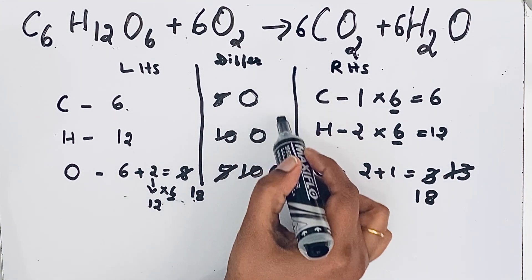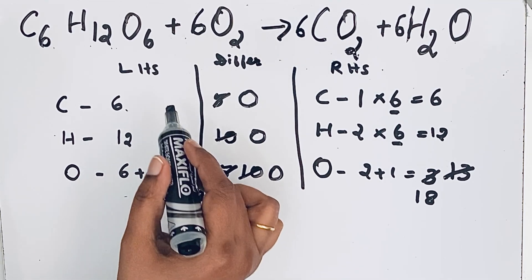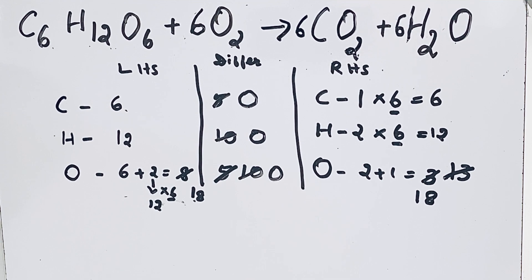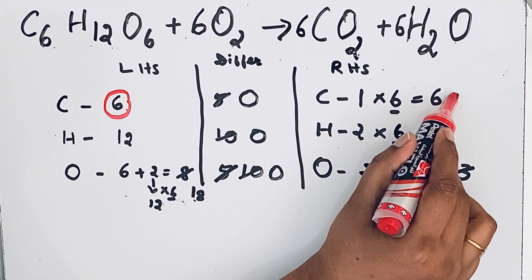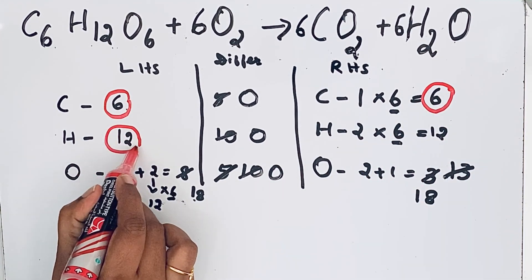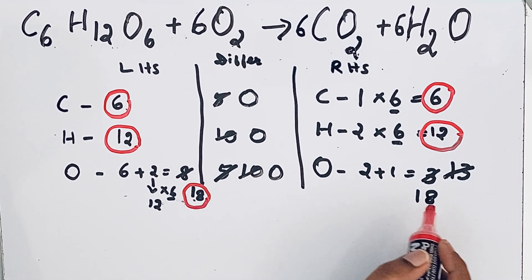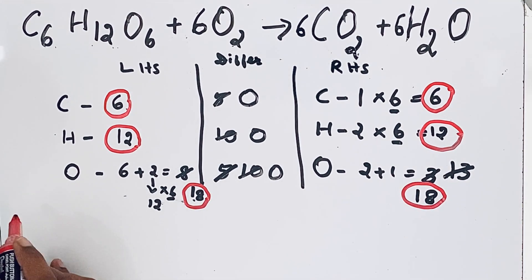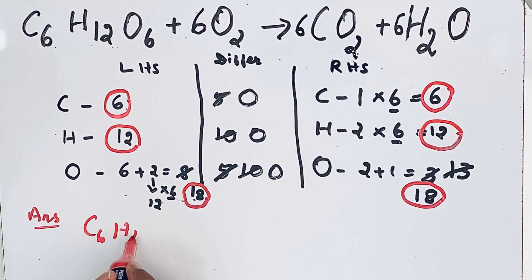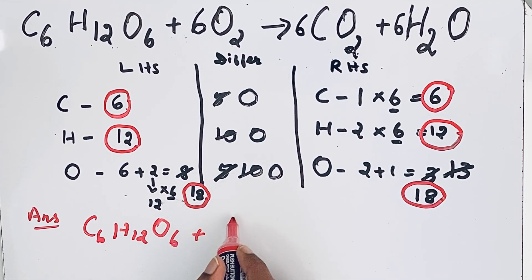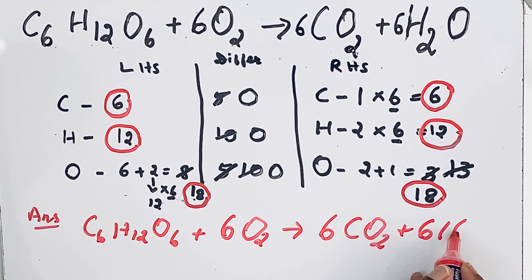It means we got 0 for all the atoms of the element, it is completely balanced. But for the safer side, let us check once again, left hand side atom with right hand side atoms. Carbon in the left hand side 6, then in the right hand side also 6. Hydrogen here 12, then this side also 12. Then for oxygen, here we have 18 oxygen atoms, in the right hand side also we have 18 oxygen atoms. So the complete balanced equation for this reaction is C6H12O6 plus 6O2 that gives 6CO2 plus 6H2O.